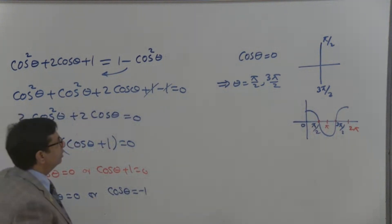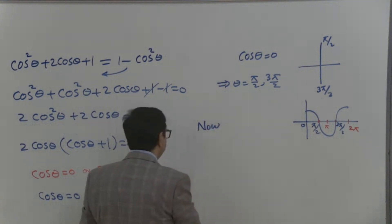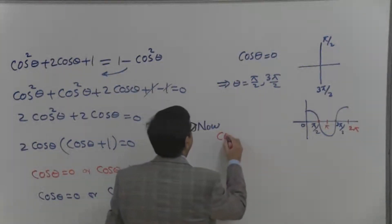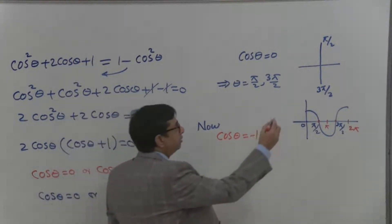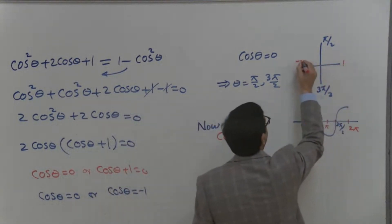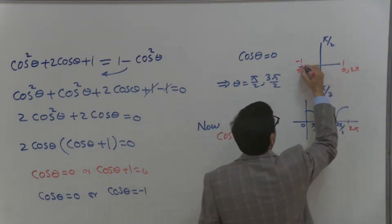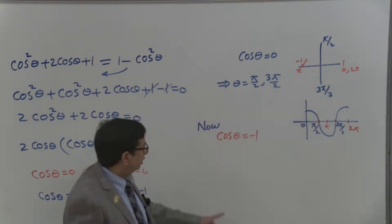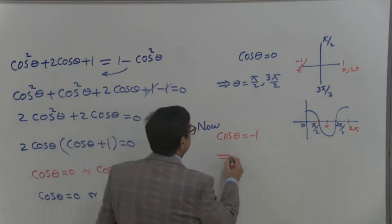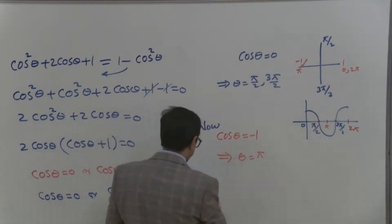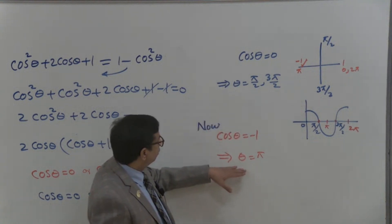Now we take the second equation: cosine theta equals negative 1. On the cosine graph, cosine is positive 1 at 0 and 2 pi, and negative 1 at pi. So for which value of theta is cosine equal to negative 1? Pi. Therefore theta equals pi. These are the three candidate values.